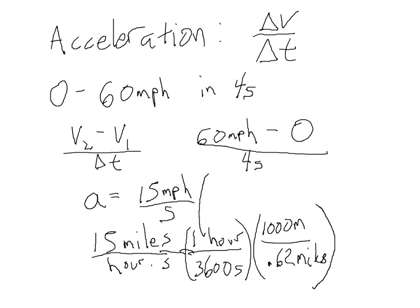Okay. Now we have miles canceling miles, hours canceling hours. When we multiply all of these numbers together, we get 6.7.